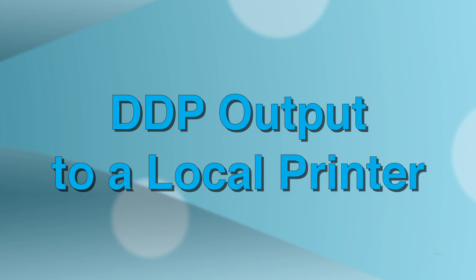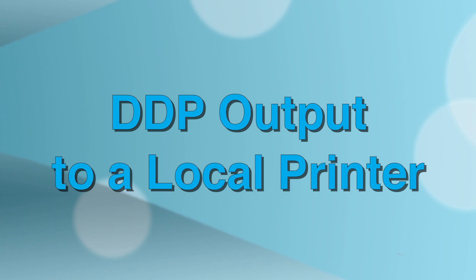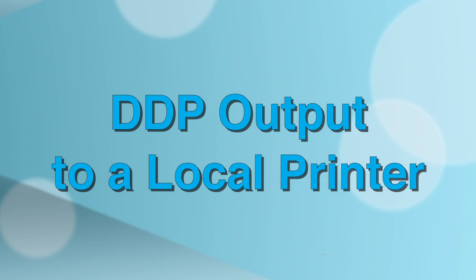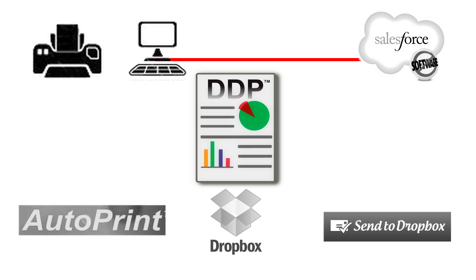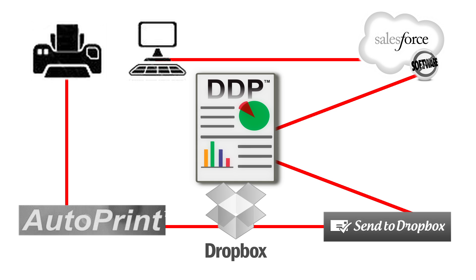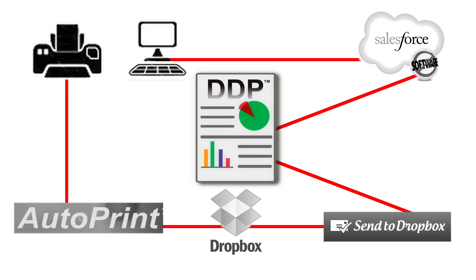This video provides a solution for sending a DDP output directly to a local printer. There are several methods that will accomplish this requirement, however in this video we will be using a combination of Dropbox and AutoPrint.